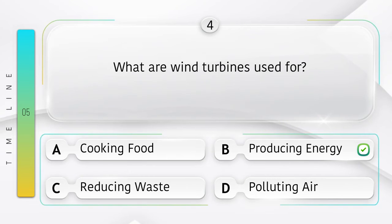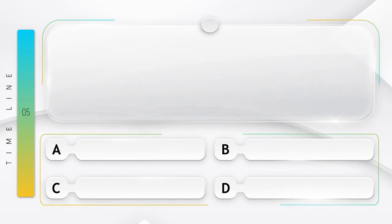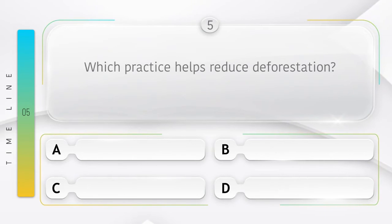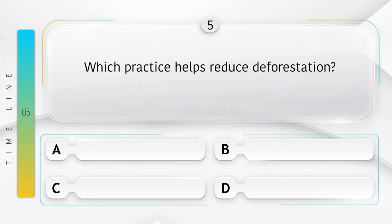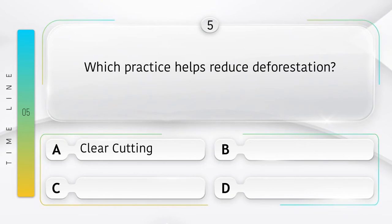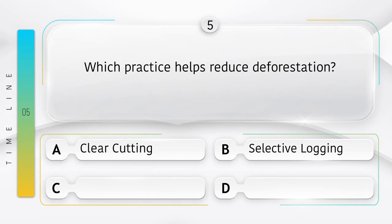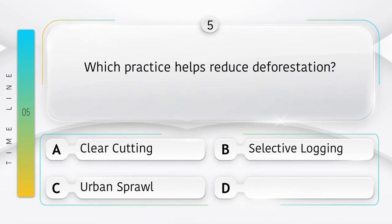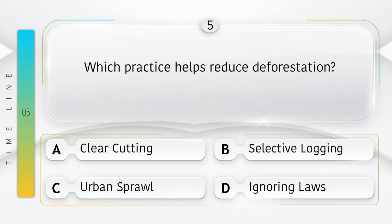Which practice helps reduce deforestation? Option A: clear cutting. Option B: selective logging. Option C: urban sprawl. Option D: ignoring laws. Answer is option B: selective logging.